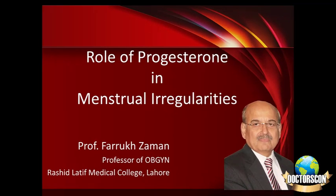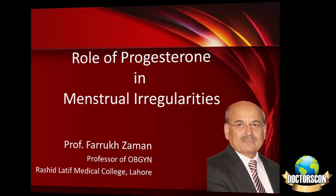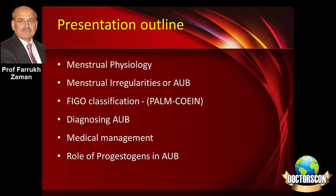Menstrual irregularities — how they are now classified — this classification has been there for the last 4-5 years, but we need to adapt it as it is now recommended by the International Federation of Obstetricians and Gynecologists. The outline of this presentation covers menstrual physiology and then menstrual irregularities, now grouped under one heading: AUB — abnormal uterine bleeding.